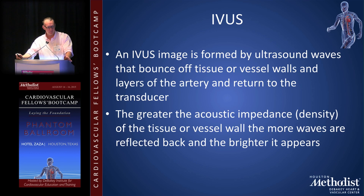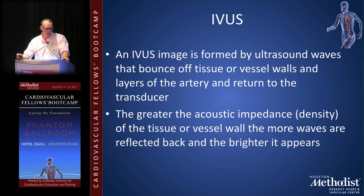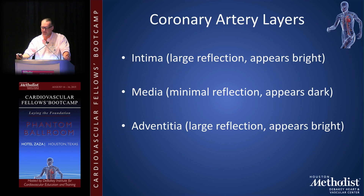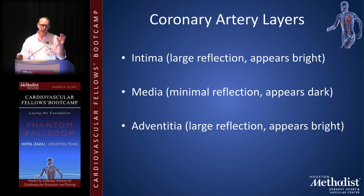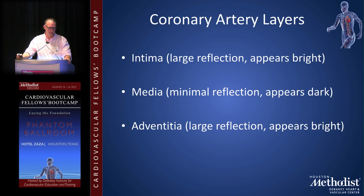In the most simplistic form, IVUS is an image that's an ultrasound wave that bounces off the tissue or vessel wall and the layers of the artery and then returns to the transducer. Depending on the acoustic impedance - meaning how dense the tissue is - you'll either get a lighter or a darker reflection. To interpret these images, you need to understand basic vascular anatomy: outside the lumen, the first layer is the intima, beyond that is the media where most of your plaque will be, and beyond the media is the adventitia.